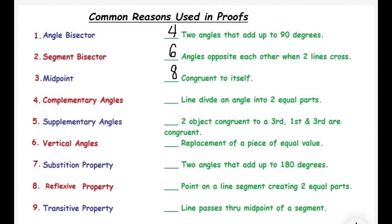Line divide an angle into two equal parts, angle bisector. Two objects congruent to the third, first and third are also congruent, that's the transitive property. Replacement of a piece of equal value, that would be the substitution property.